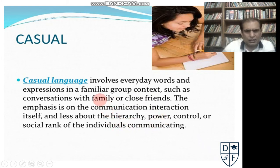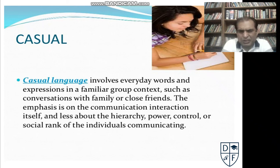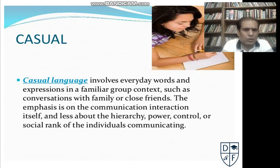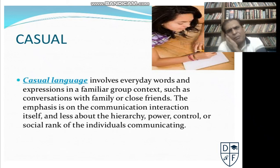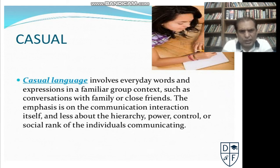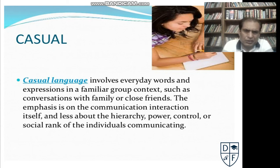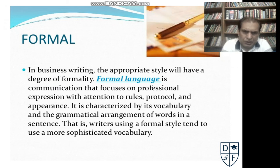ایک چیز یہاں پہ ضرور ہے کہ جب ہم family کی بات کرتے ہیں تو جب ہم parents سے بات کرتے ہیں، لیکن یہاں پھر بھی وہ level نہیں ہے جو formal communication اور business communication کے اندر ہوتا ہے۔ بعض اوقات fathers کے ساتھ بچے یا بیٹی بہت زیادہ frank ہوتی ہیں تو ان کے اندر بھی casual language کا ایک level ہوتا ہے۔ وہاں پہ power، control اور rank نہیں دیکھا جاتا، بلکہ individuals کے ساتھ level of formality دیکھا جاتا ہے۔ اس لیے family اور close friends کے اندر جو گفتگو ہوتی ہے، جس میں ہم عام روزمرہ کے الفاظ استعمال کرتے ہیں، اسے ہم casual language کہتے ہیں۔ اور casual language کے اندر language hierarchy کو follow نہیں کیا جاتا — power، control اور social ranks نہیں دیکھے جاتے۔